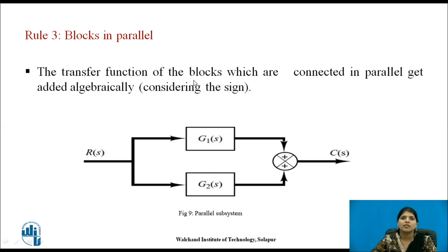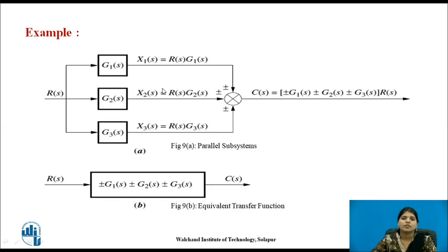Rule 3 covers blocks in parallel. If blocks are in parallel, they are directly added together — considering the sign. If there is a negative sign, it must be accounted for. For example, G1, G2, and G3 connected in parallel are added at a summing point: G1(S) ± G2(S) ± G3(S), with R(S) common to all. The equivalent transfer function for the parallel subsystem is the sum of all parallel branch transfer functions.